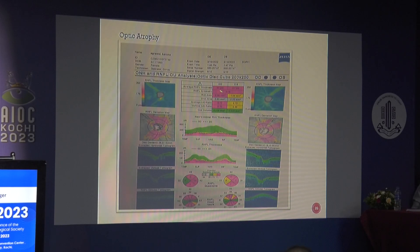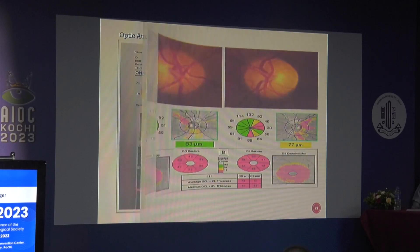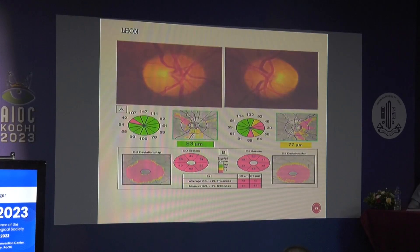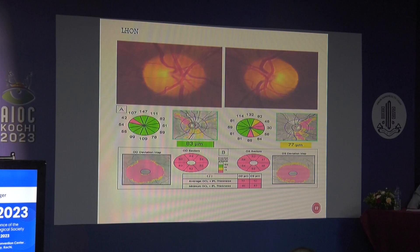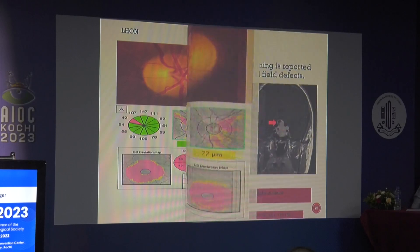In optic atrophy, you see gross thinning of the RNFL. Similarly, in Leber's hereditary optic neuropathy there is thinning of both RNFL and GCL layers, and prognosis can be explained based on those findings.